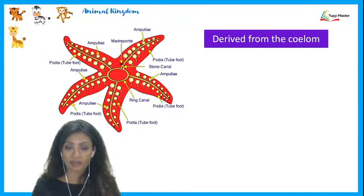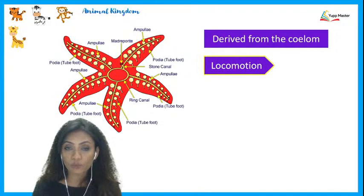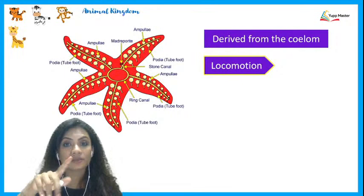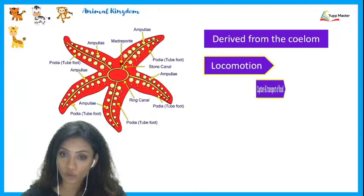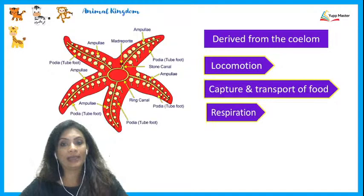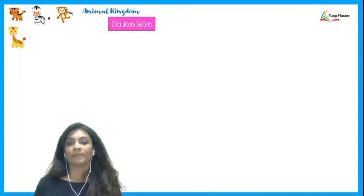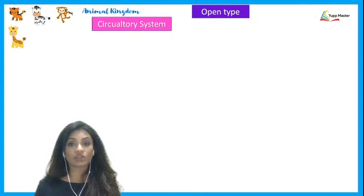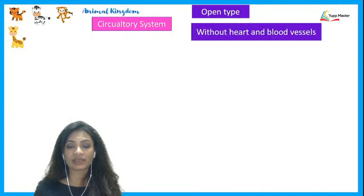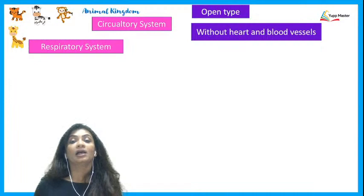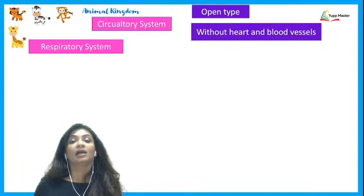The water vascular system is derived from the coelom and helps in locomotion, food capture and transport, and respiration. The circulatory system in echinoderms is of an open type — there is no heart and no blood vessels, which is why it is called an open type of circulatory system.